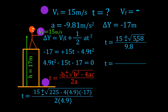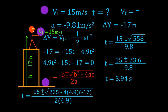Taking the square root of 558 gives approximately 23.6. So t equals 15 plus or minus 23.6, divided by 9.8. Using the positive sign: t equals 3.94 seconds. Using the negative sign: t equals minus 0.88 seconds.